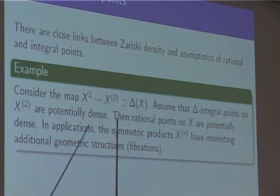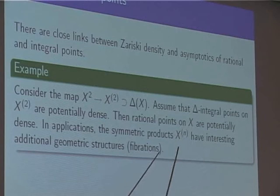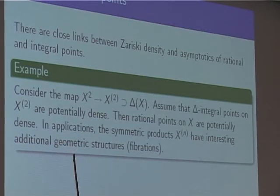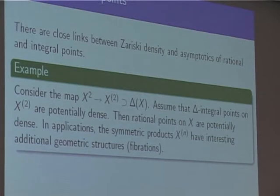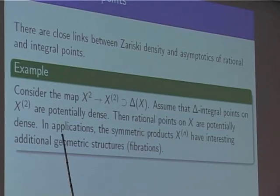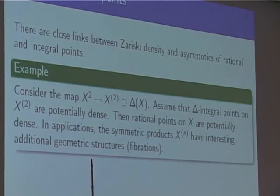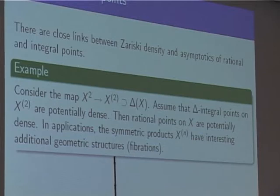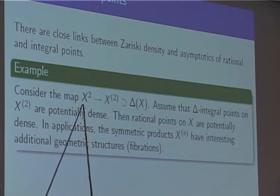Quite often, symmetric products of a variety — like symmetric products of K3 surfaces — exhibit additional geometric data such as elliptic or abelian fibrations that one can exploit to prove more than what is possible on X itself. For example, Brendan Hassett and I proved that if you take any K3 surface over a number field, there is some effective n — depending on the degree of the K3 — such that the symmetric product X^n has potential Zariski density of rational points, even though we cannot do this for the K3 surface itself.